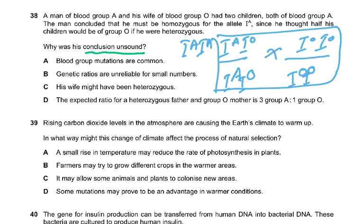This is a very important syllabus point which they are checking - genetic ratios are unreliable for small numbers. You need to look at my video on this chapter in which I have explained this in great detail. Genetic ratios are unreliable for small numbers.